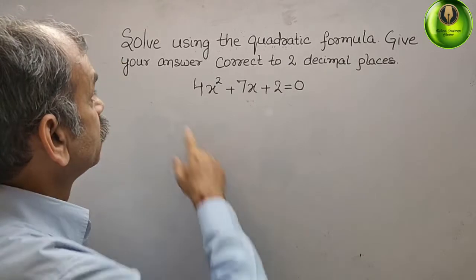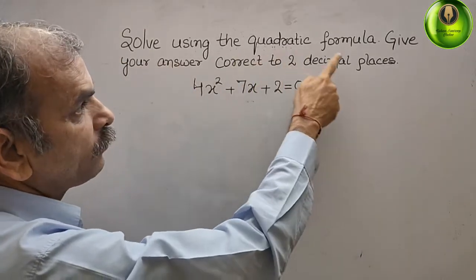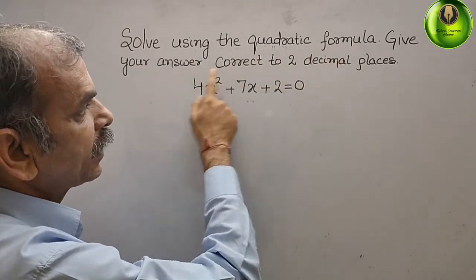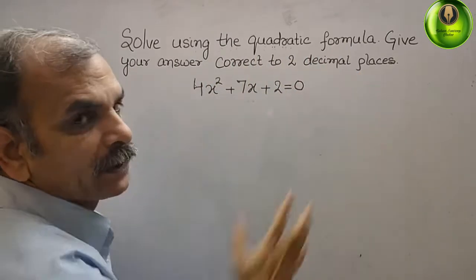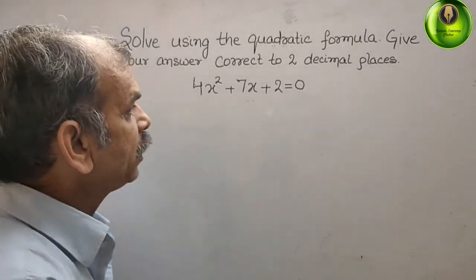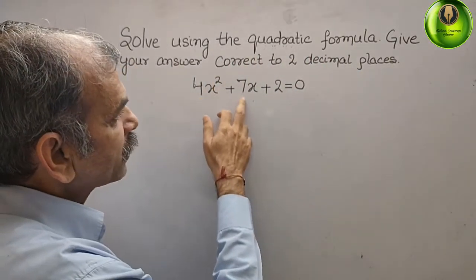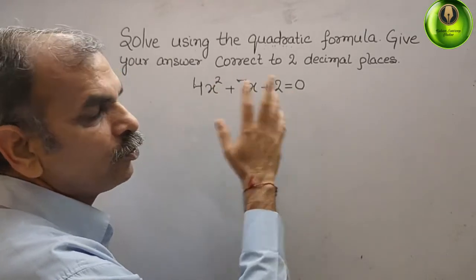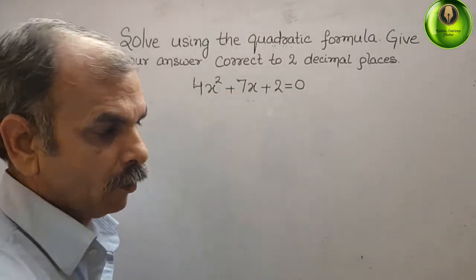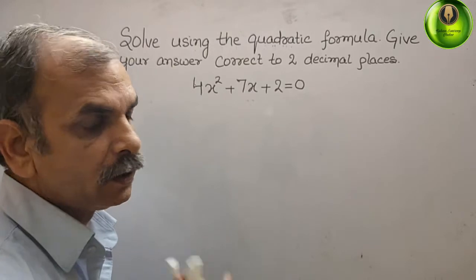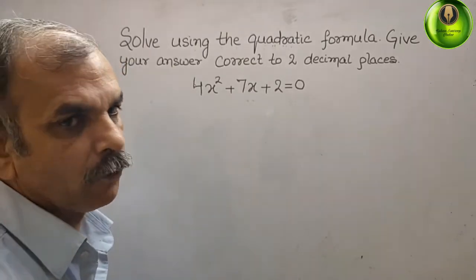Your question is solve using the quadratic formula, give your answer correct to two decimal places. What they have given is 4x² + 7x + 2 = 0. Now, so just we will go for our quadratic formula.